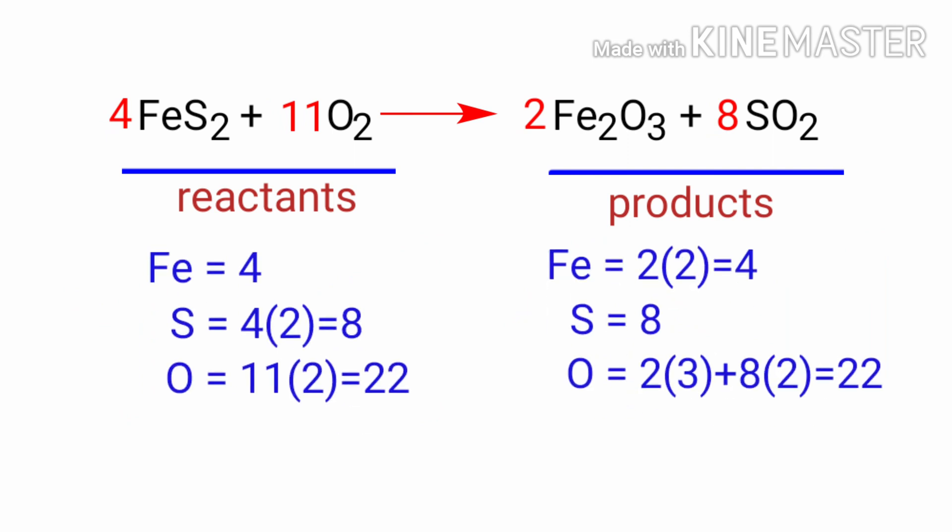The equation is now balanced. There are 4 Iron atoms, 8 Sulphur atoms and 22 Oxygen atoms on both sides.